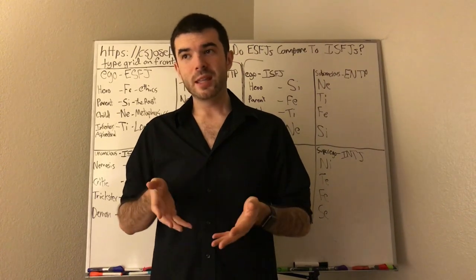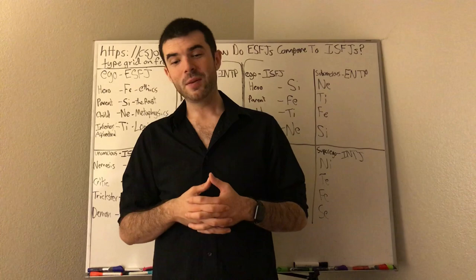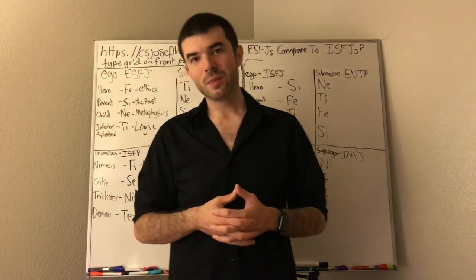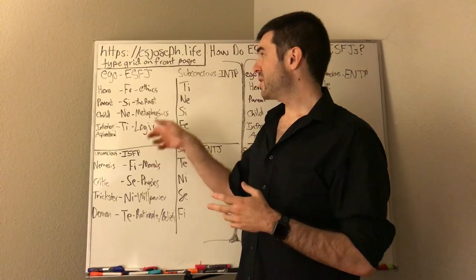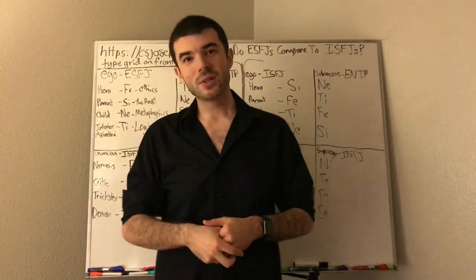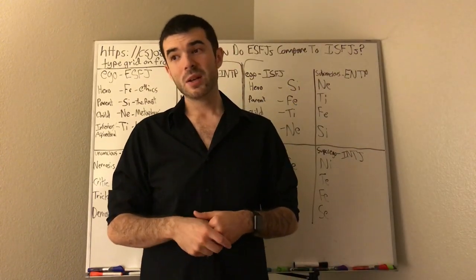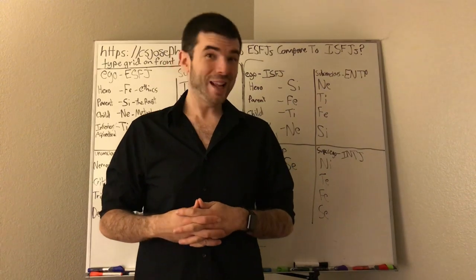They're both informative. In fact, I believe the ISFJ is triple informative, which means their ego, their subconscious, and their shadow are all informative at the same time, which means there's no such thing as directness coming out of them whatsoever. That also includes the ESFJ, the other triple direct type.